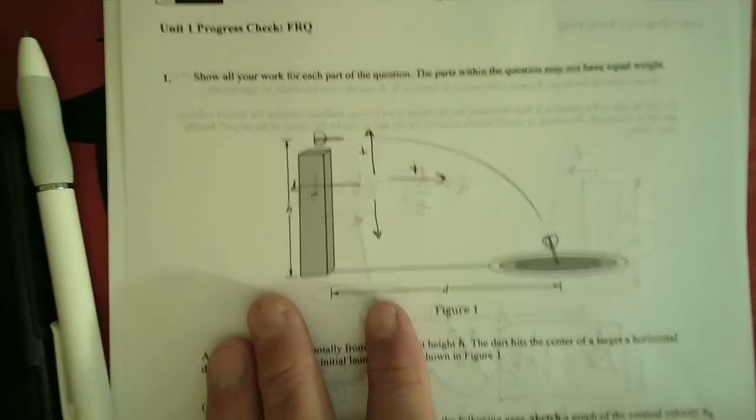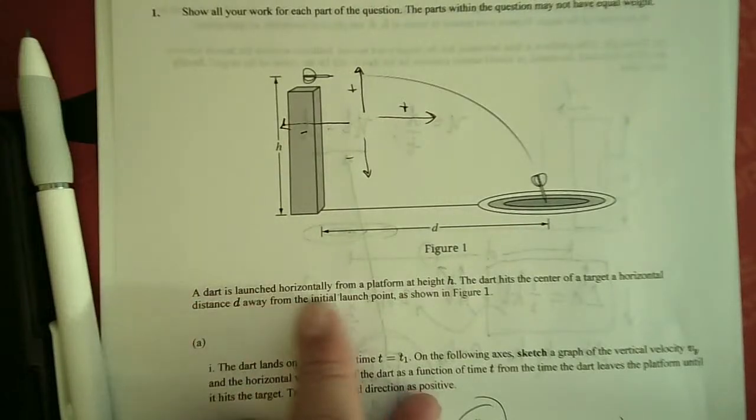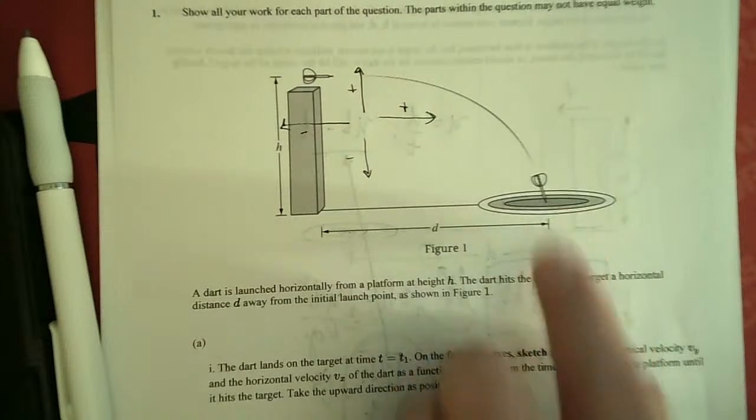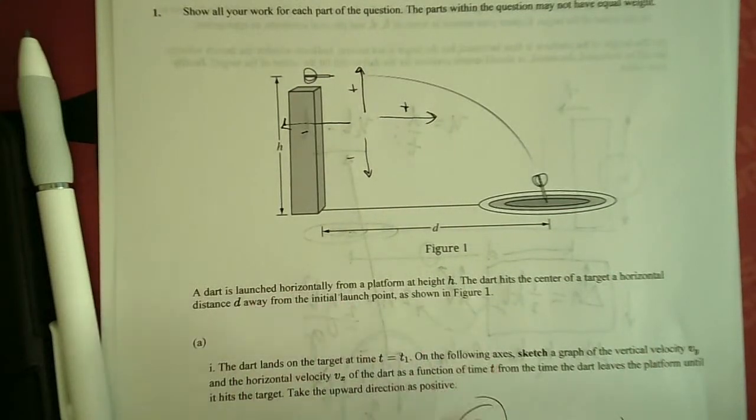Alright, so here we have a problem in which we are going to launch a horizontal dart from a platform at height h. The dart hits the center of a target at a horizontal distance d away from the initial launch point as shown in figure 1.